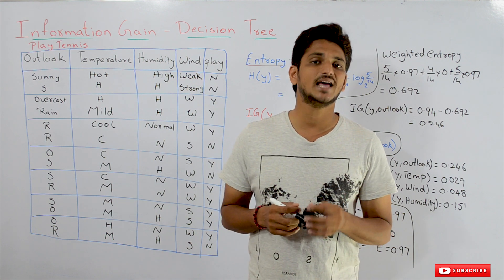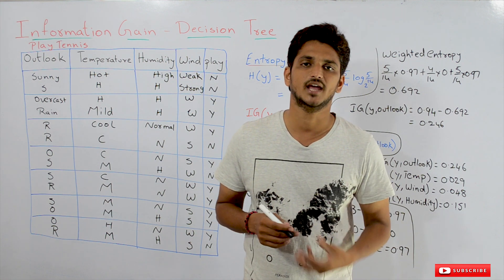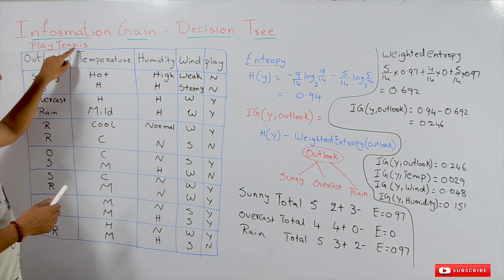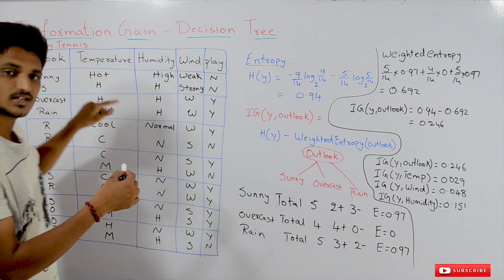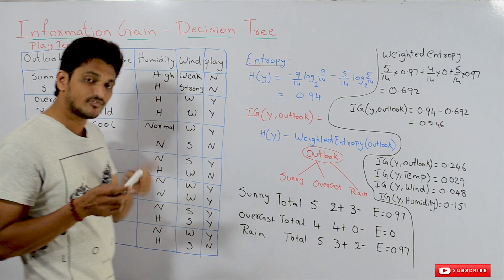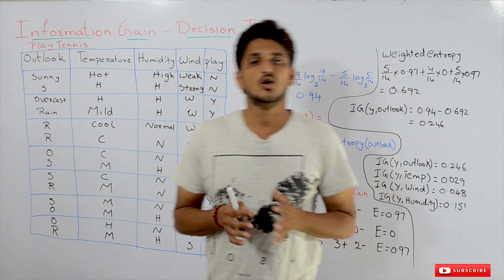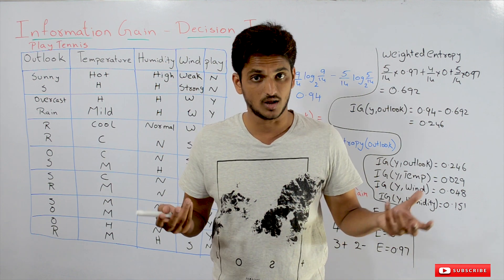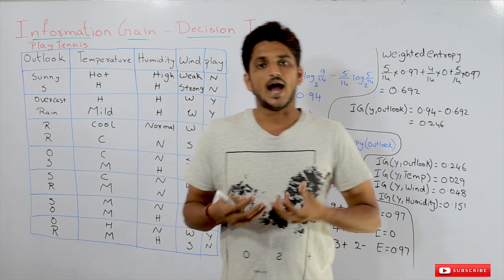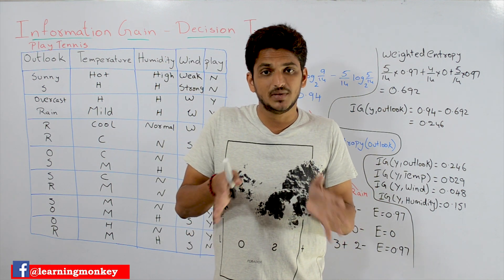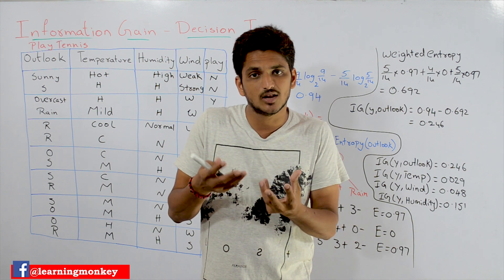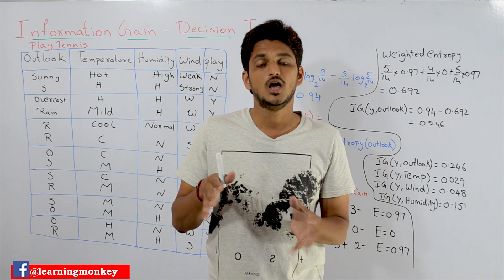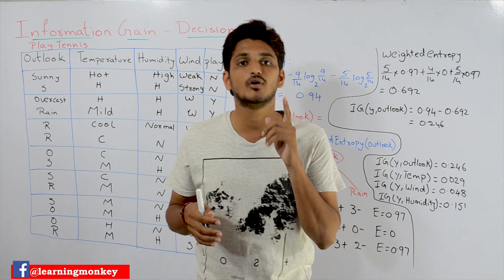Coming to information gain, let us take an example data set and understand what information gain is. The example data set which we discussed here is the play tennis data set. This we already discussed in our last class — the entropy class and graphical intuition class. The goal of a decision tree is: suppose you are having 10 columns, identify the column that gives the best separation — the column that helps the most in doing the best prediction. How to identify that column? Using information gain.